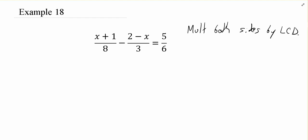Let's go through with clearing the fractions. The least common denominator between 8, 3, and 6 is going to be 24.